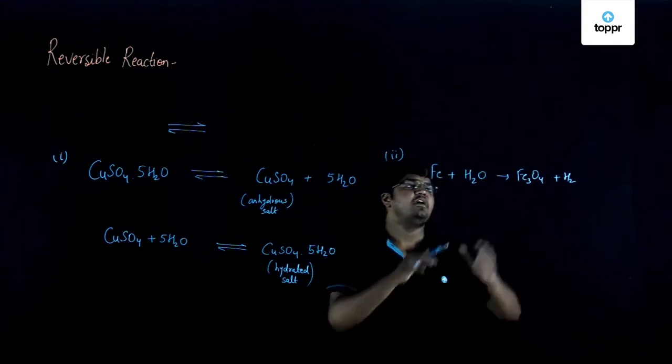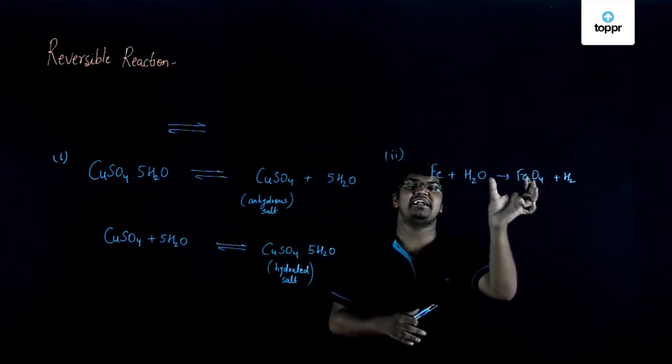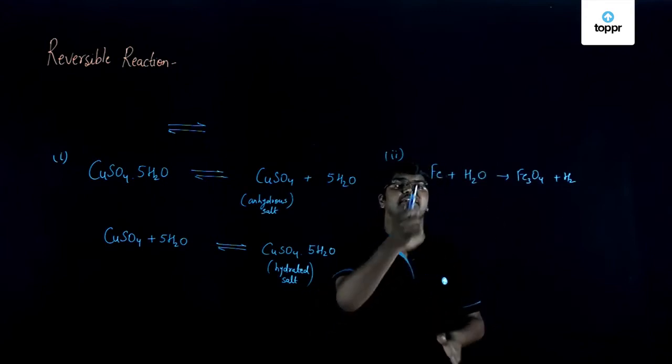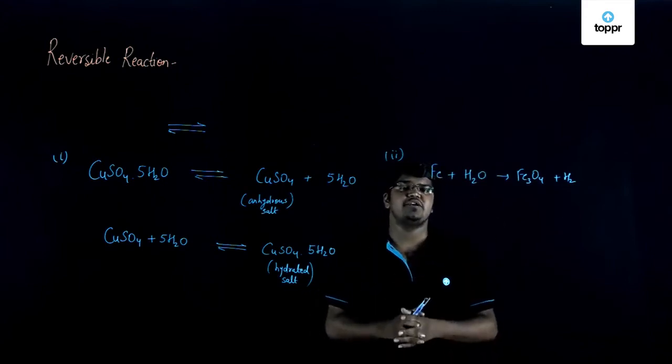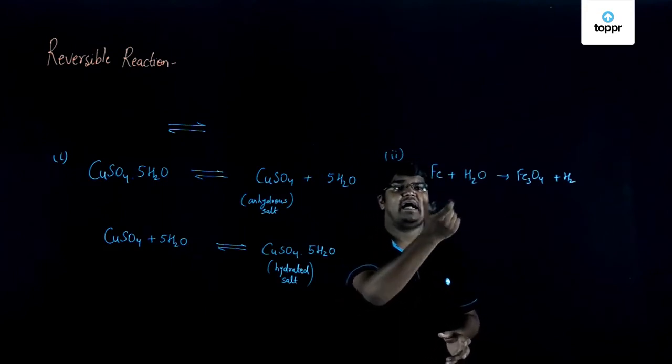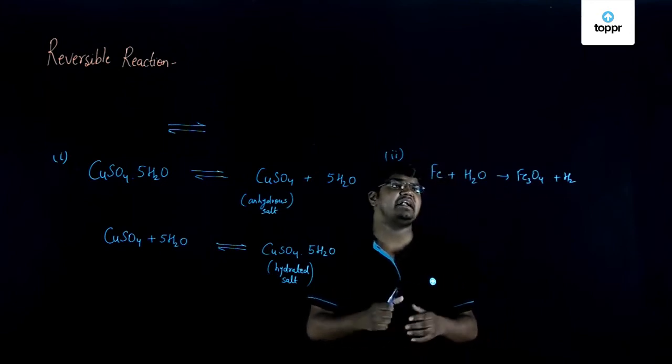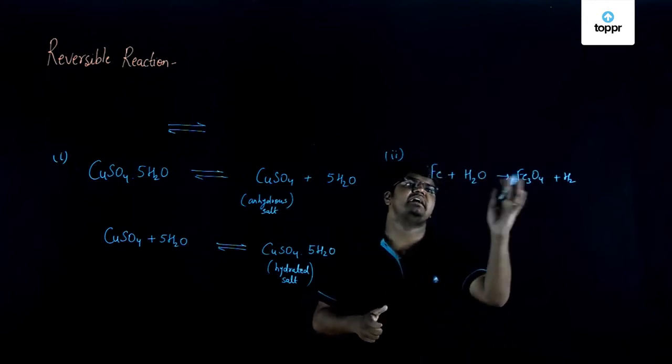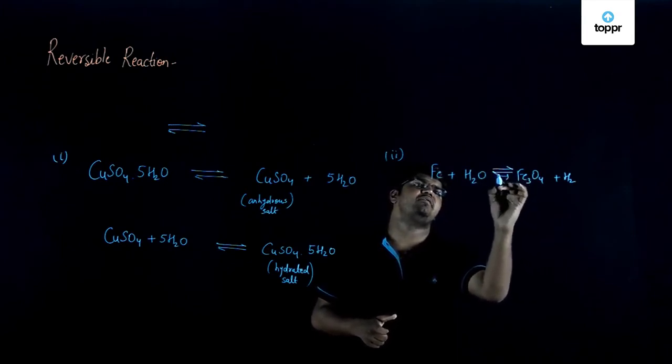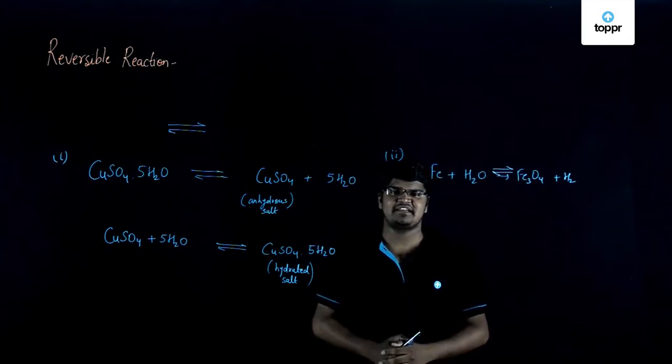Now, if hydrogen gas is passed over this magnetic oxide, this red-hot heated oxide, it will partially convert back to iron and steam. We will have our iron which was initially our reactant and the steam which was also a reactant. You can see that since this reaction is occurring in both directions, we have to replace it with a reversibility sign. This reaction is an example of a reversible reaction.